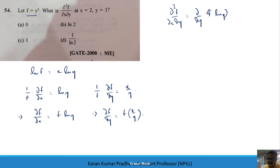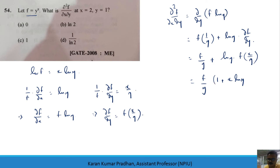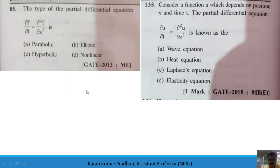Now, ∂²f/∂x∂y = ∂/∂y (f·ln y) = f·(1/y) + ln y·(∂f/∂y) = f/y + ln y·(fx/y) = (f/y)(1 + x·ln y). At x = 2, y = 1: f = 1^2 = 1, f/y = 1/1 = 1, and 1 + 2·ln(1) = 1 + 0 = 1. Therefore ∂²f/∂x∂y = 1, and option C is the answer.